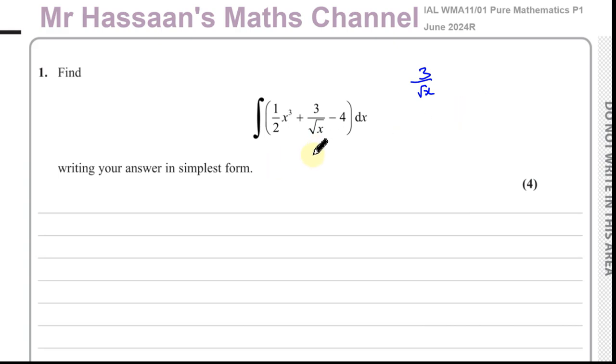So basically anything in surd form must be written in index form. So I'm going to write this as 3 over x to the power of a half, because we know that the square root of x is equal to x to the power of a half. Why? Because x to the power of a half times x to the power of a half gives you x. So the square root of x is x to the power of a half. In general, you can say the nth root of x is going to be x to the power of 1 over n.